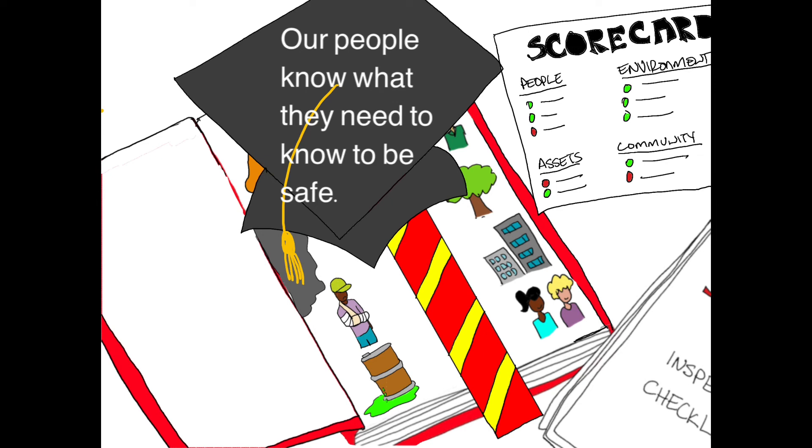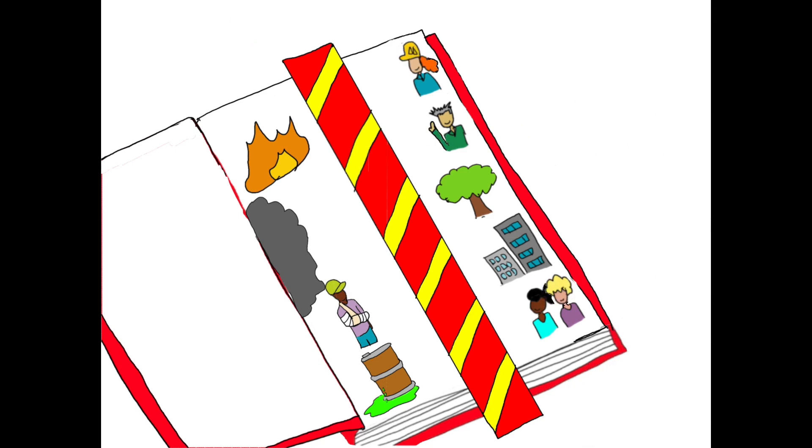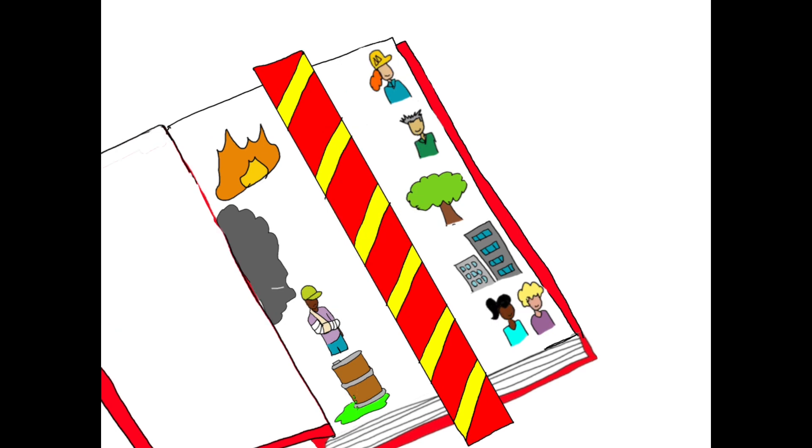An HSE management system isn't a binder that sits on the shelf. Instead, it's a capture of people thinking critically about what can cause harm and agreeing together on the actions they need to take to stop it. It's striving to uncover new risks and to test if the barriers we're relying on are working as intended. And it's equipping all of our people at all levels of the organization with the tools to do work safely.